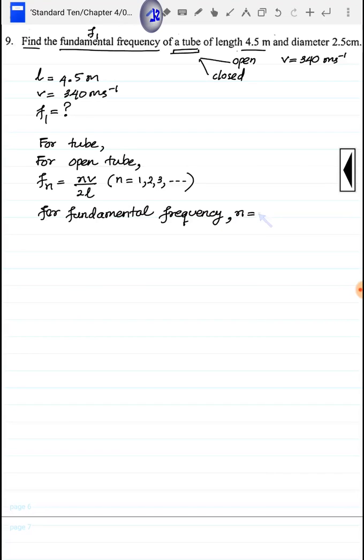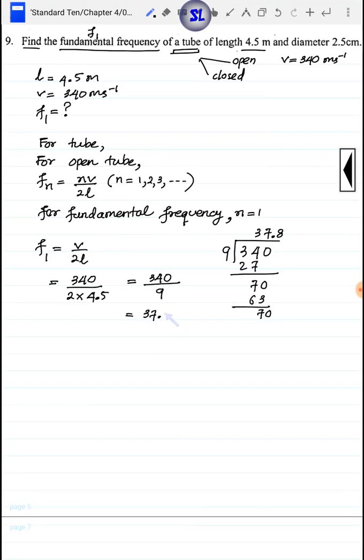So the frequency is equal to 1 times v by 2L. Let's calculate this now. Using 340 divided by 2 times 4.5, we get the result.